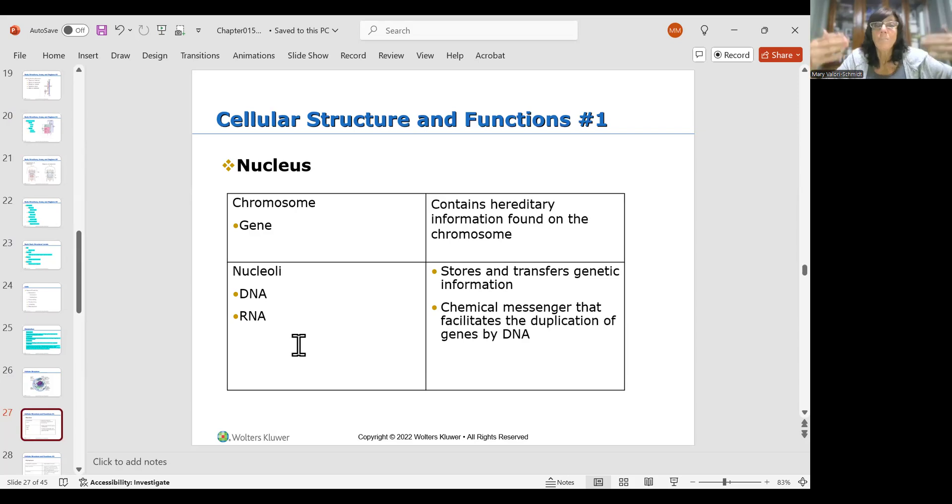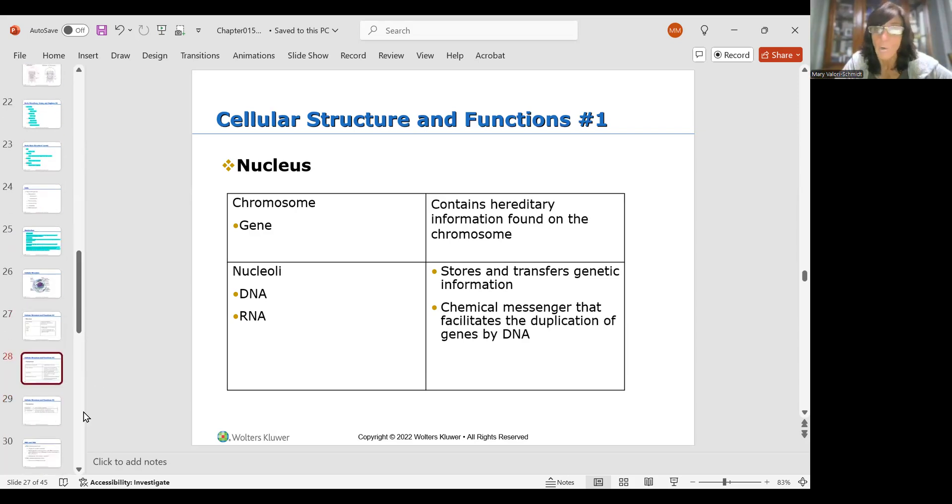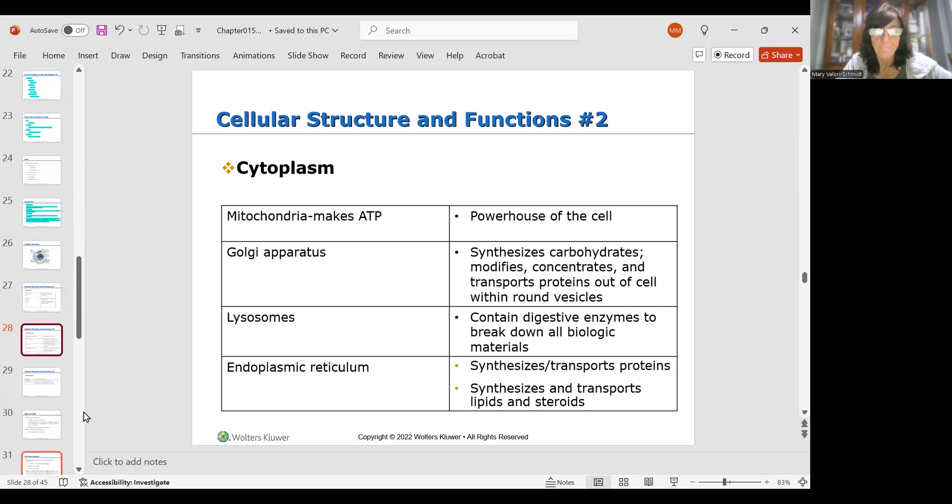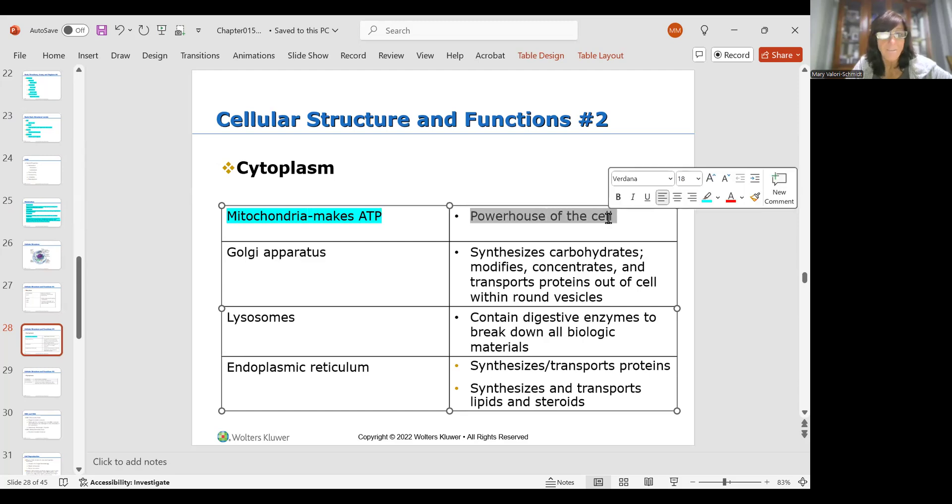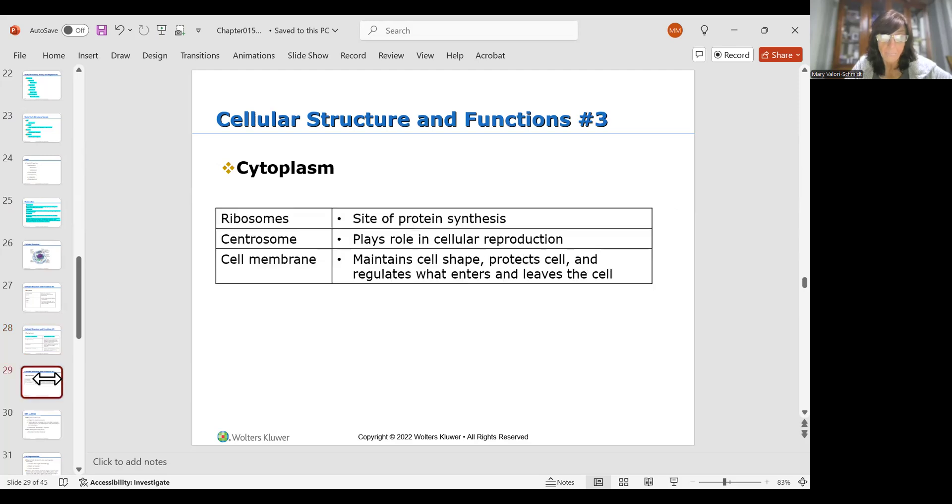Mitochondria, it's also called the powerhouse of the cell. Super important, the mitochondria makes ATP, which is adenosine triphosphate. We're going to get a little more detail about that in a minute, but you must know that the mitochondria is the powerhouse of the cell and it makes ATP. And then these are all the other parts of the cell. I'm not going to get into great detail about them. You really need to know more about understanding the ATP, the adenosine triphosphate.